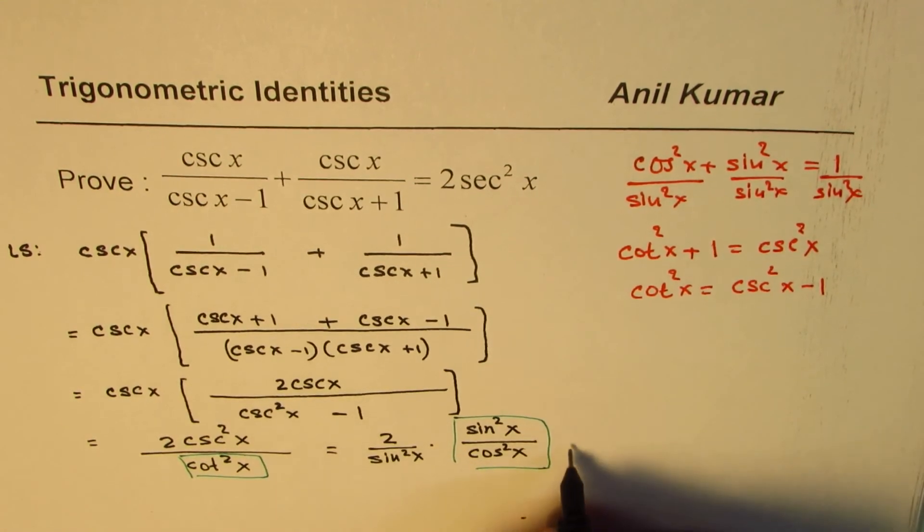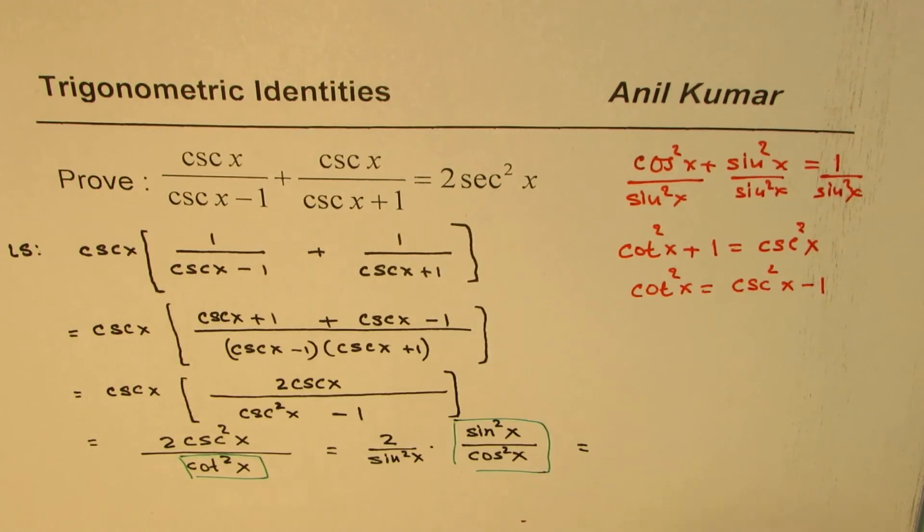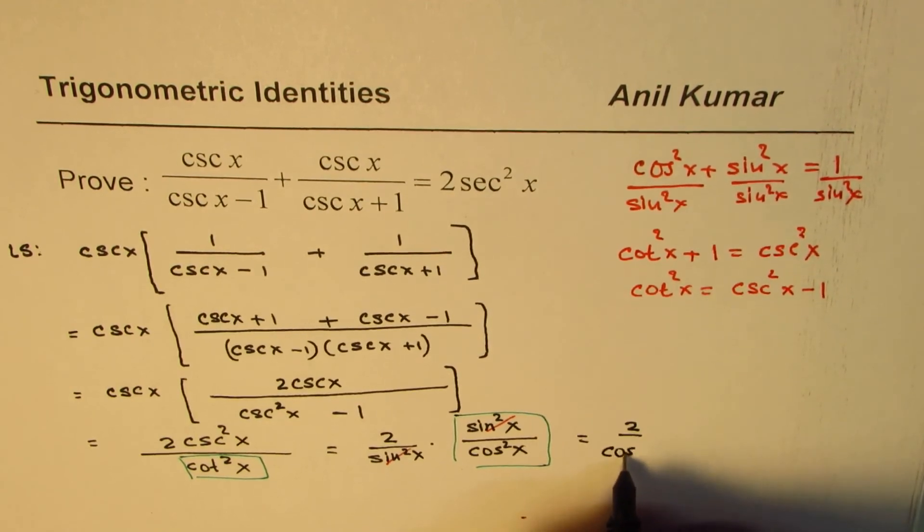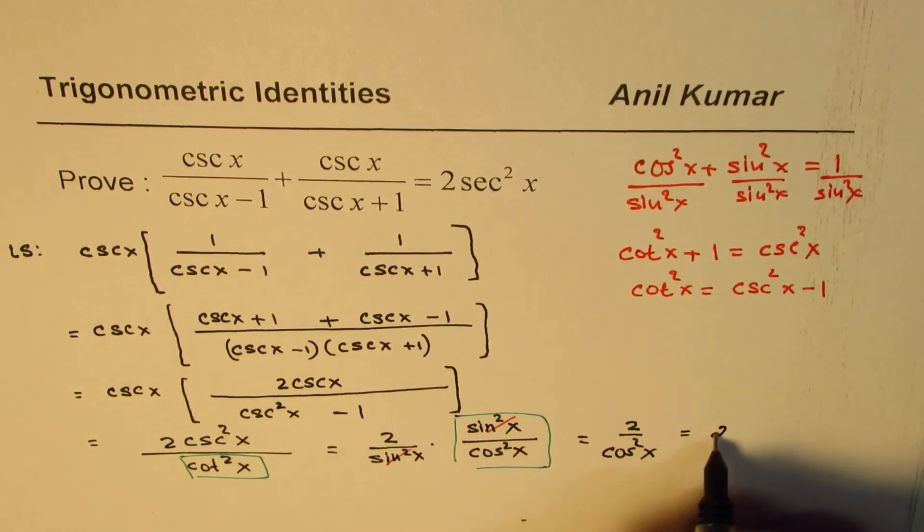Now, that could be simplified by cancelling sine square x. So, what you get here is 2 over cos square x, which is 2 secant square x.